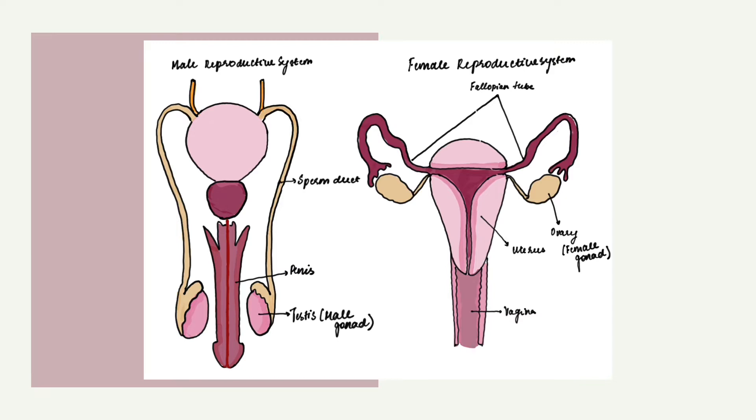And the female reproductive organs are the vagina, uterus, fallopian tubes, cervix, and the ovary.